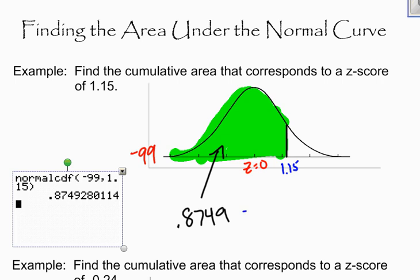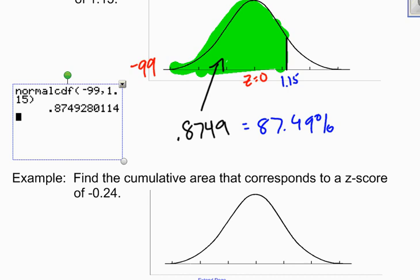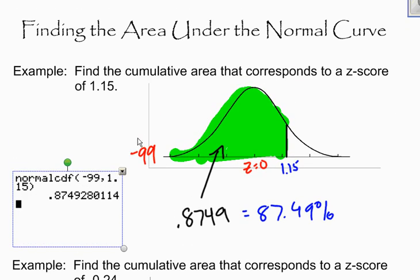So this could also be written as 87.49% of this entire curve — going four decimal places means I'm accurate to the nearest one-hundredth of a percent. I'm not going to write my answer in a complete sentence because this is just a basic problem; when I get to word problems, I'll do that. This is just example number one of finding the area under a normal curve. If you continue to watch my videos, you'll see more examples like this.